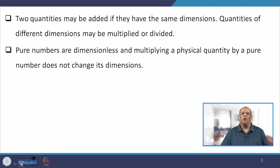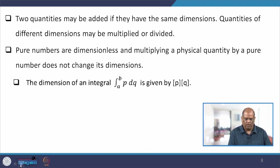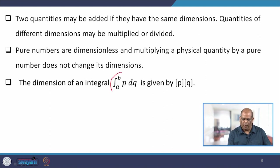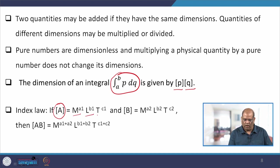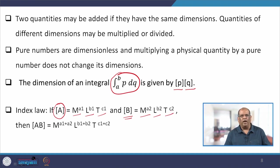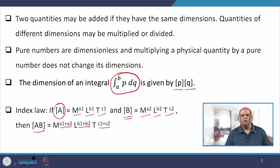Pure numbers are dimensionless, and multiplying any physical quantity by a pure number does not change its dimension. The dimension of an integral ∫p dq is given by the dimension of p multiplied by the dimension of q. The important index law states that if quantity A has dimension M^a1·L^b1·T^c1 and quantity B has dimension M^a2·L^b2·T^c2, then their product has dimension M^(a1+a2)·L^(b1+b2)·T^(c1+c2).